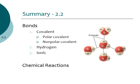In part two of this chapter we focused on how atoms come together and bond to create molecules and compounds — covalent bonds (polar and nonpolar), hydrogen bonds, and ionic bonds. Once you have these molecules and compounds, they interact to produce chemical reactions. In part three we'll look at water and why it's really important for living organisms.